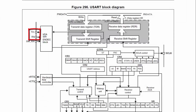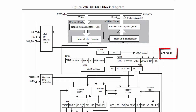TX and RX pins are used to transmit and receive data, and RTS and CTS pins are used for hardware flow control, which have already been explained. If this hardware block is used in synchronous mode, then the serial clock pin will also be used.